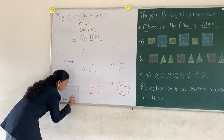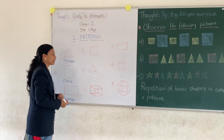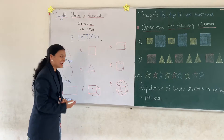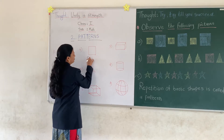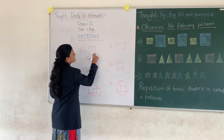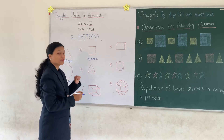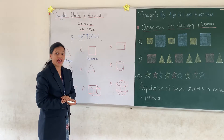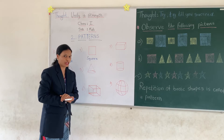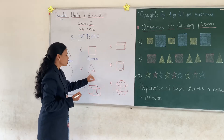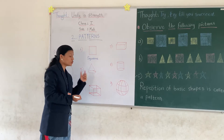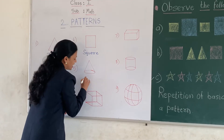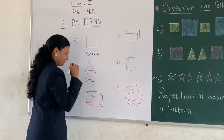Fourth one — can you tell me the name of the shape? Square. What shape is this? Square. Very good. Fifth one — we have learnt flat shapes as well as solid shapes. Do you remember? Can you tell me the name of the shape? It looks like a birthday cap. Very good. This is a cone. Very good, students.